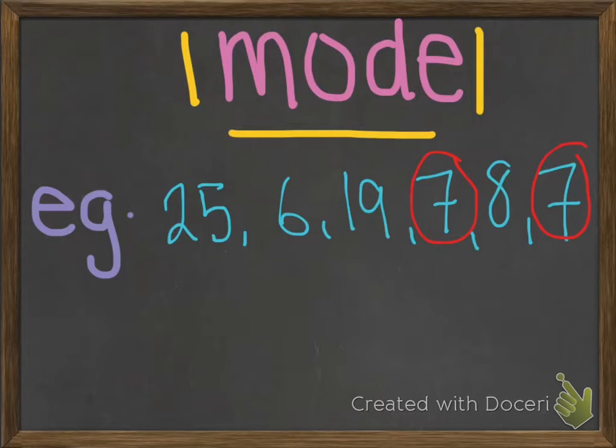Now, we will be finding the mode. The mode is the most repeated or common number. When looking for the mode, you are trying to find the number that repeats the most. In the data, 7 repeats twice, while the other numbers only appear once. Therefore, the mode is 7.